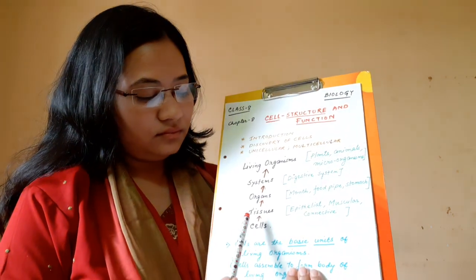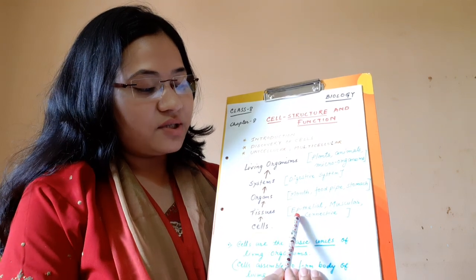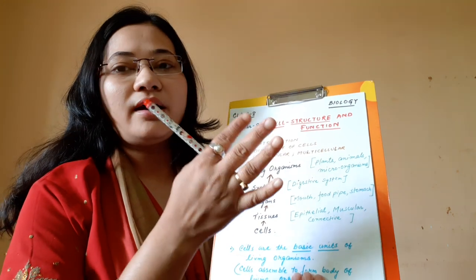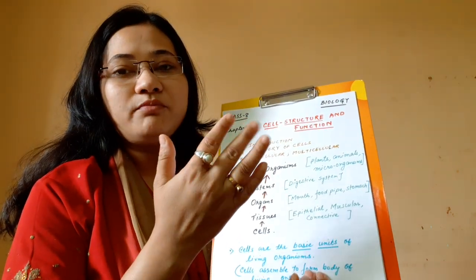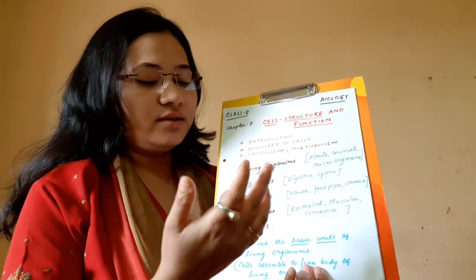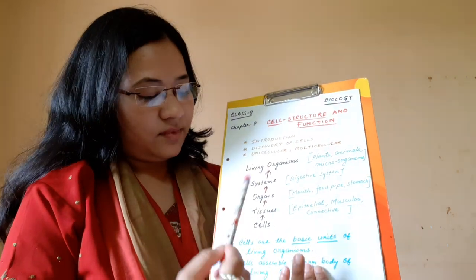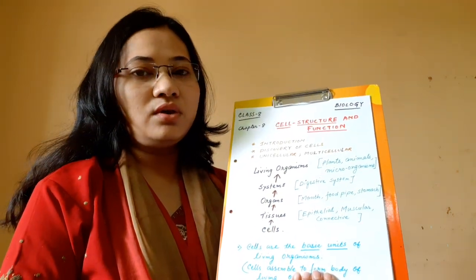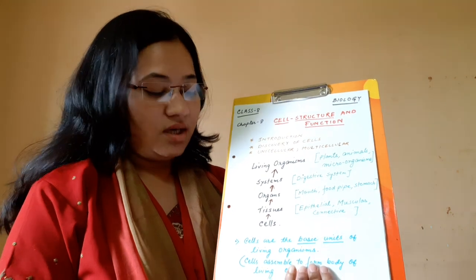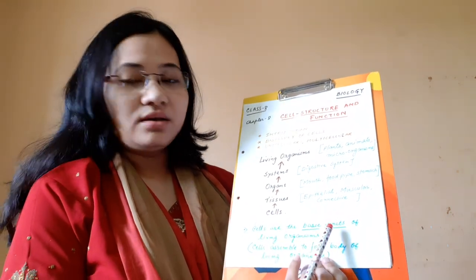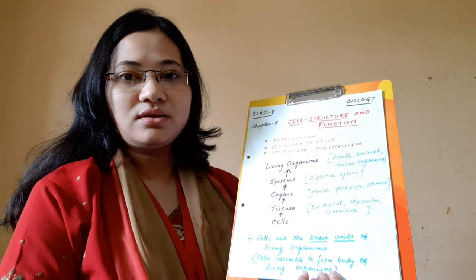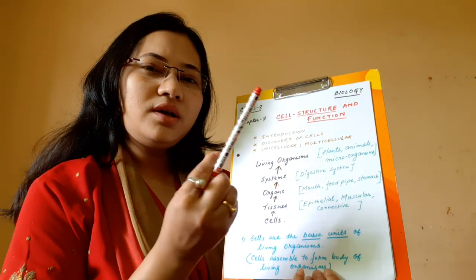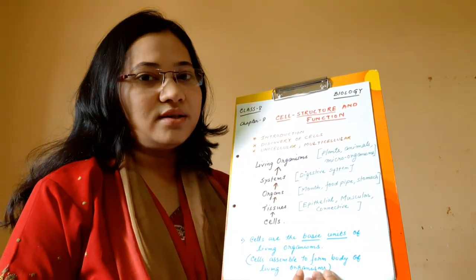Organs are made up of tissues, which can be plant tissue or animal tissue. There are different types of tissues — epithelial tissue, muscular tissue, connective tissue. For example, a hand is made up of muscular tissues, nervous tissues, and other tissue types. These tissues are in turn made up of the smallest basic units called cells.